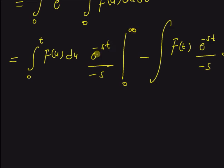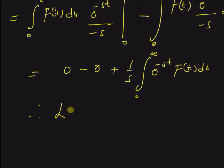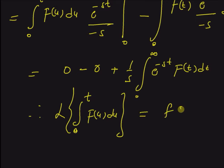So we have: integral 0 to t f of u du written as is, multiplied by e to the power minus st over minus s, evaluated from 0 to infinity, minus the integral of f of t times e to the power minus st over minus s dt. At t equal to infinity, the exponential term is 0 and at t equal to 0, the integral is 0 because both limits are the same. So the boundary terms vanish, giving us 1 over s times integral 0 to infinity of e to the power minus st f of t dt. Therefore, Laplace transform of the integral from 0 to t of f of u du equals F of s over s, by definition of the Laplace transform.